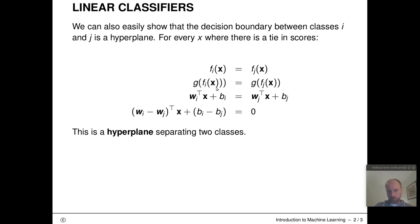By definition, this holds if and only if w_i transpose times x plus b_i is the same as w_j transpose times x plus b_j. By rearranging terms, we can see that this is exactly the mathematical form of a hyperplane.